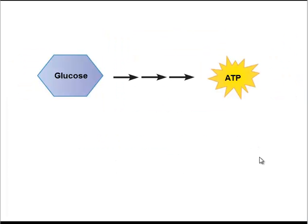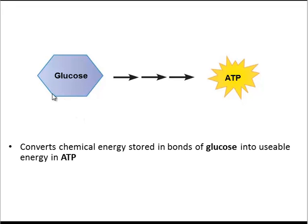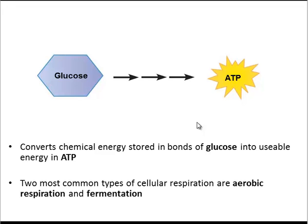Let's start with an overview. In a nutshell, cellular respiration is basically converting the chemical energy in glucose into the chemical energy of ATP, which is much more usable. There are a few different types of cellular respiration, but the two main ones we're going to discuss are aerobic respiration and fermentation. Usually when people mention cellular respiration, they're referring to aerobic respiration, so that will be our focus.